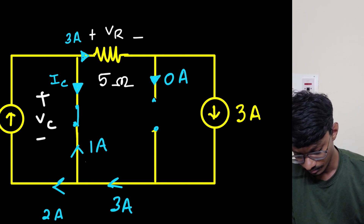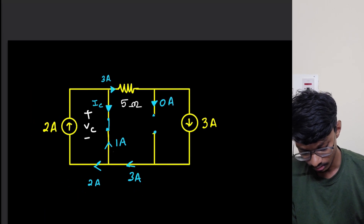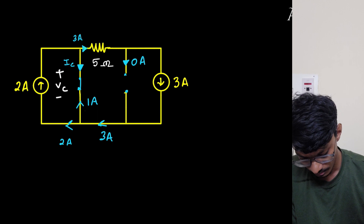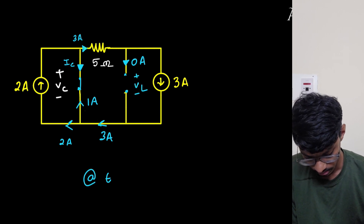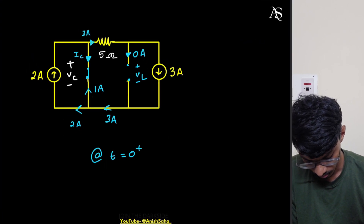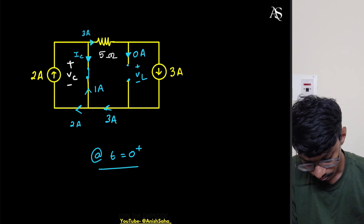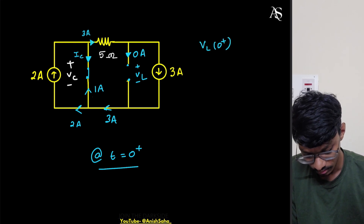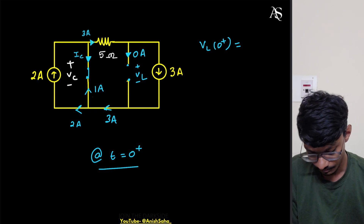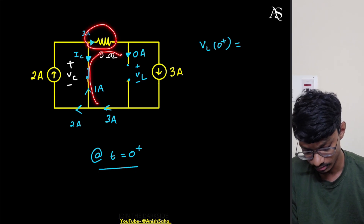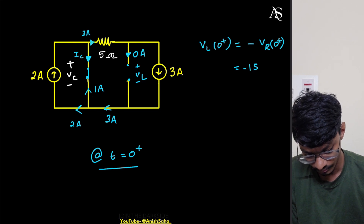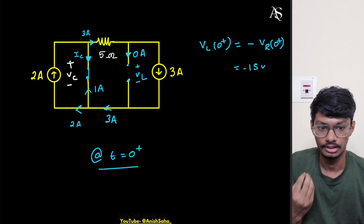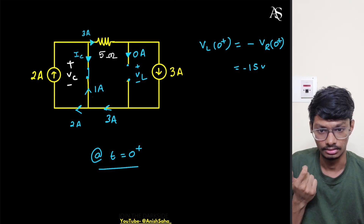At t equals zero plus, VL equals the drop across the resistor, so VL(0+) = −VR(0+), which equals 15 volts. So our initial inductor voltage is 15 volts.